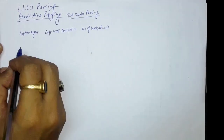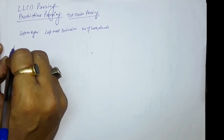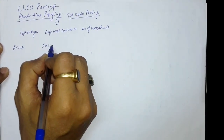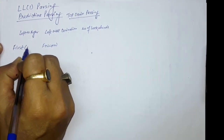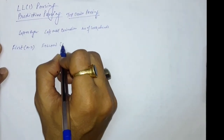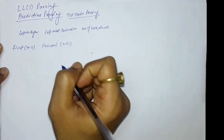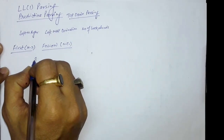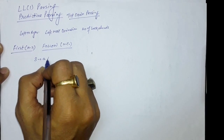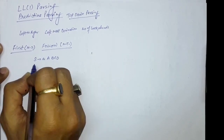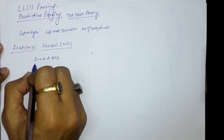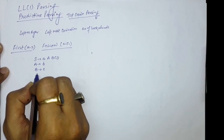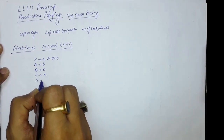For doing LL1 parsing, we need to compute two functions: FIRST and FOLLOW. FIRST will be computed for all the non-terminals in the grammar, and similarly FOLLOW will also be computed for all the non-terminals in the grammar. For example, let's say we have a grammar: S produces a A B C D, then A produces b, B produces c, C produces d, and D produces e.